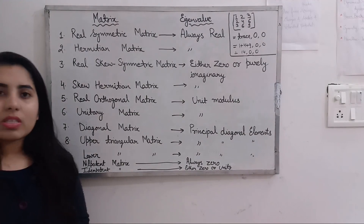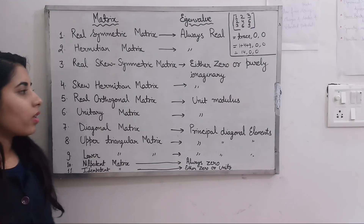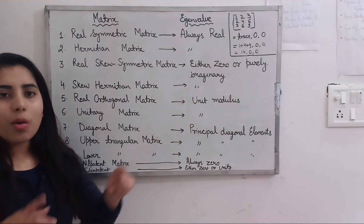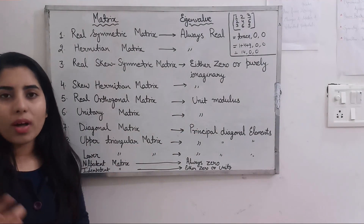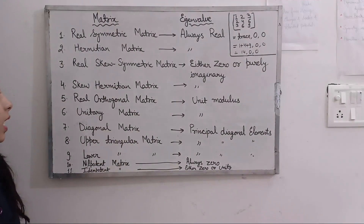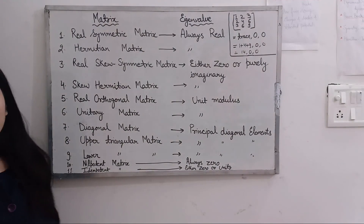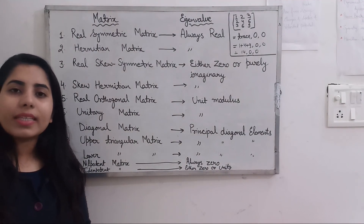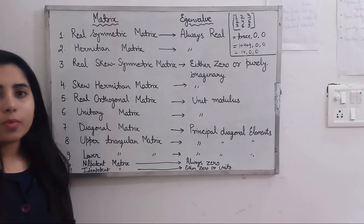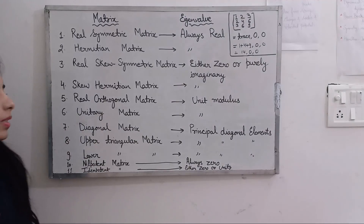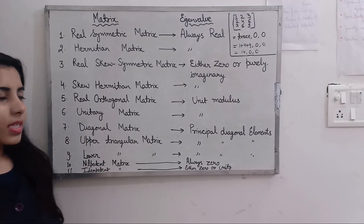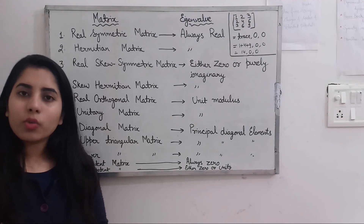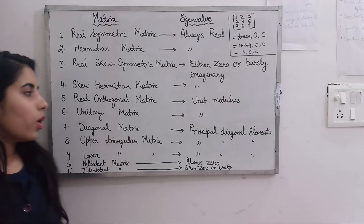Next is the real orthogonal matrix. The corresponding eigenvalues have unit modulus, meaning |λ| = 1, so they are ±1. If the eigenvalues have unit modulus, you can consider them as ±1 for a real orthogonal matrix.